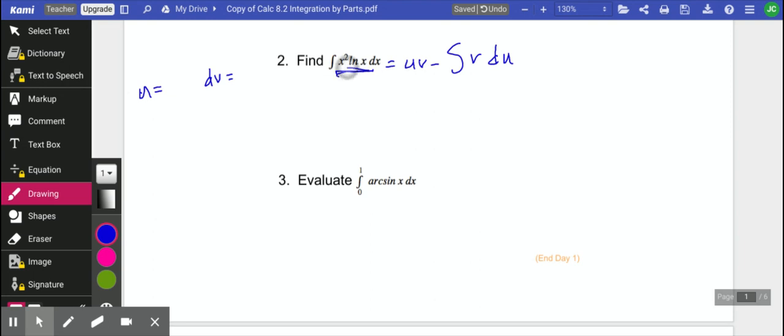So from this part, we want to pick for u something that's going to get simpler when we take the derivative of it, which both of them would. So let's say you decided to just approach it like we did the last one: x squared and then dv was natural log of x.